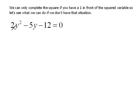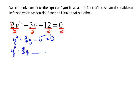But there is something that we can do so that we can complete the square. We need to get rid of this 2. And the way we do that is by dividing. And if we divide every single term by 2, it's as if we're dividing both sides by 2. So now what we have is y² - 5/2 y - 6 = 0. Now we can complete the square, but we do need to take this constant term over. So we have y² - 5/2 y, and then we're going to leave a blank so that we can complete the square, equals a positive 6.